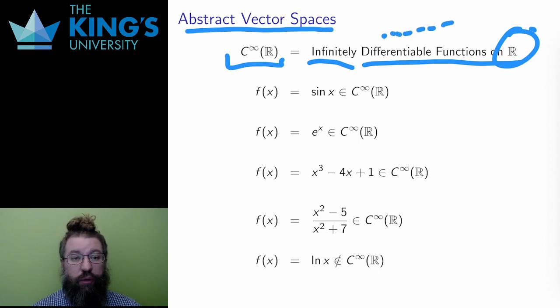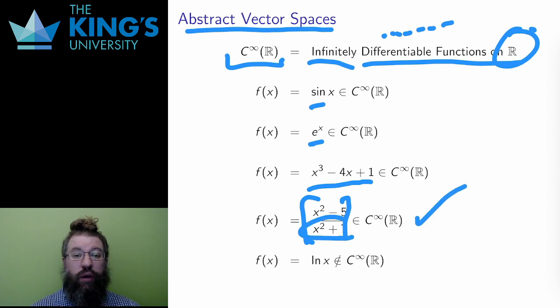These are single variable functions from calculus, things like sin(x), e^x, polynomials such as x³ - 4x + 1. Anything that is defined for all real numbers and is differentiable. The function (x² - 5)/(x² + 7) is in C∞(R) since it has domain R, there is no division by zero here. x² + 7 is always positive. The function ln(x) is not in C∞(R), since its domain only includes the positive real numbers.